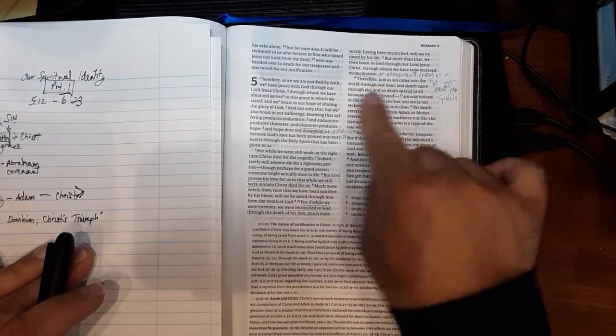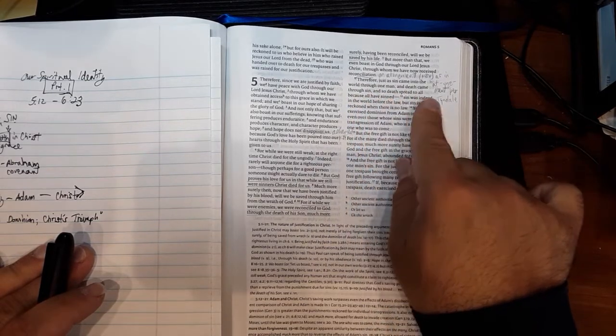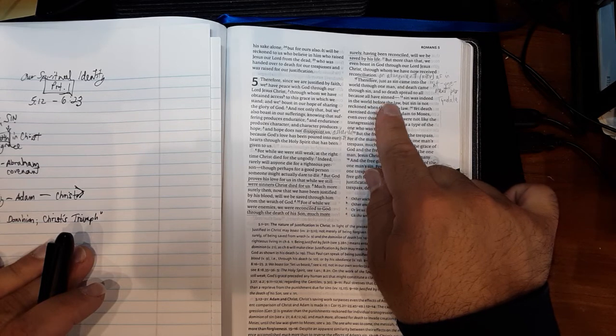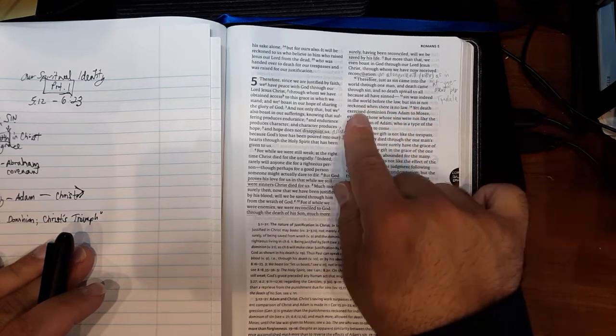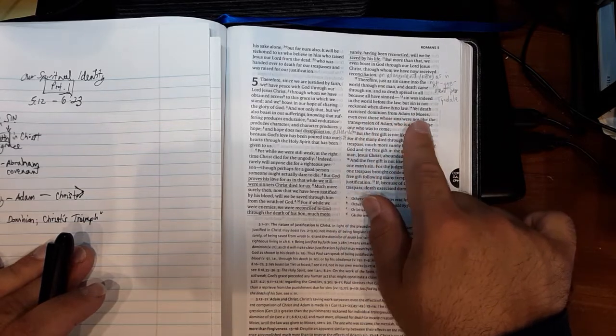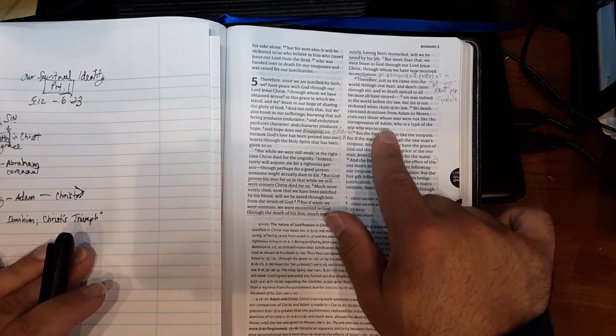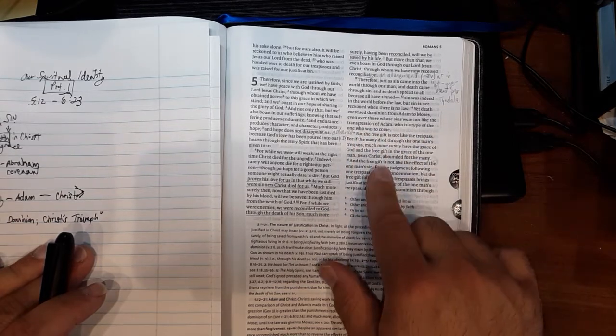So therefore, just as sin came into the world through one man and death came through sin, so death spread to all because all have sinned. Sin was indeed in the world before the law, but sin is not reckoned when there is no law. Yet death exercised dominion from Adam to Moses, even over those whose sins are not like the transgressions of Adam, who is a type of the one who is to come.